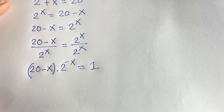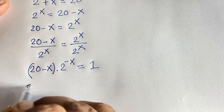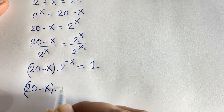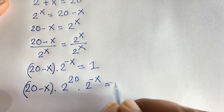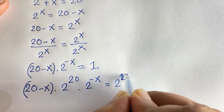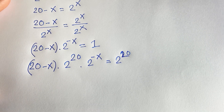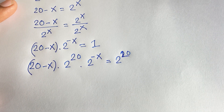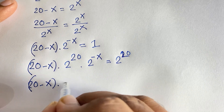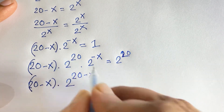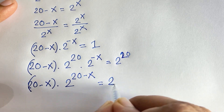Now 20 minus x times 2 to the power minus x, and here is 20. So I multiply both sides by 2 to the power 20. So 20 minus x times 2 to the power 20 times 2 to the power minus x is equal to 2 to the power 20. According to exponential rules, this simplifies to 20 minus x times 2 to the power 20 minus x is equal to 2 to the power 20.